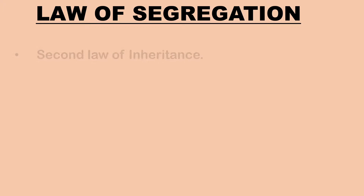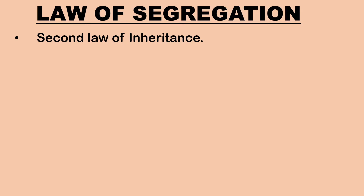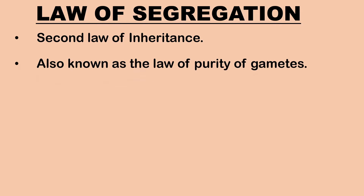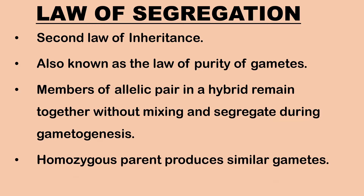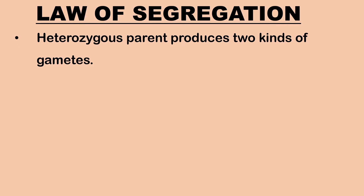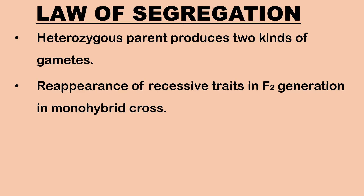Next is the law of segregation. It is the second law of inheritance, also known as the law of purity of gametes. Members of an allelic pair in a hybrid remain together without mixing with each other and segregate at the time of gametogenesis, so that each gamete receives only one character, either dominant or recessive. A homozygous parent produces all similar gametes, while a heterozygous parent produces two kinds of gametes, each having one allele. Law of segregation can be explained by a monohybrid cross. Re-appearance of recessive trait in F2 generation proves the law.